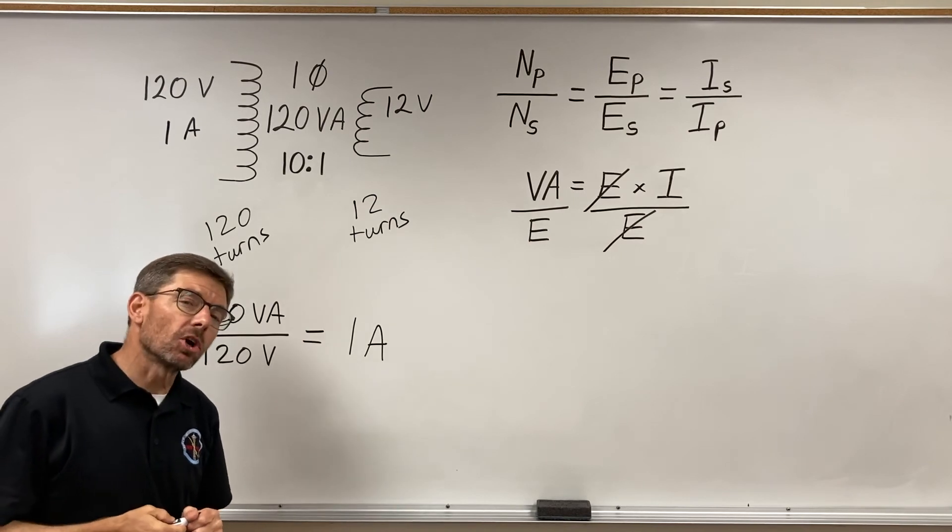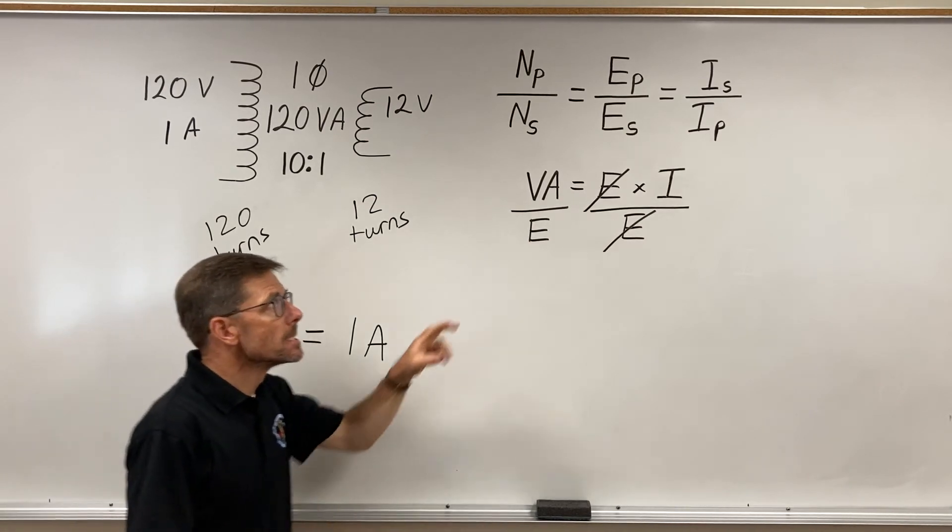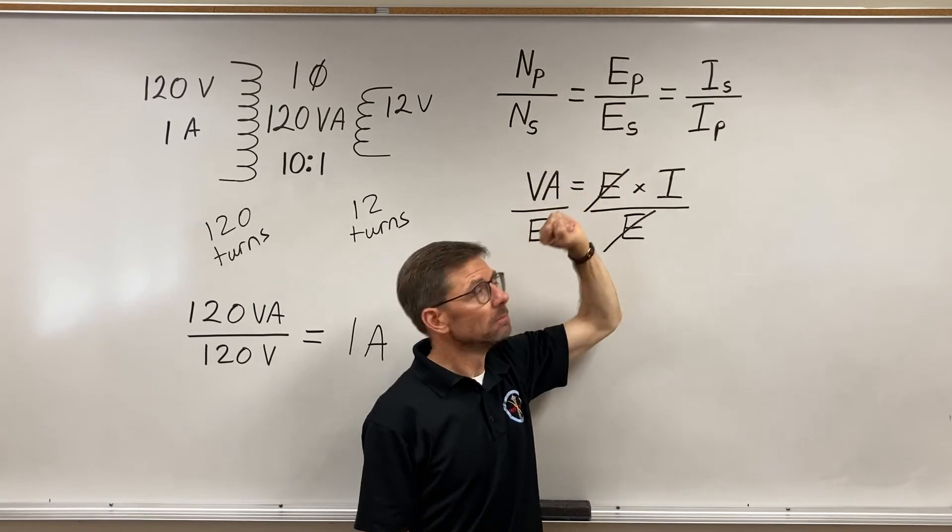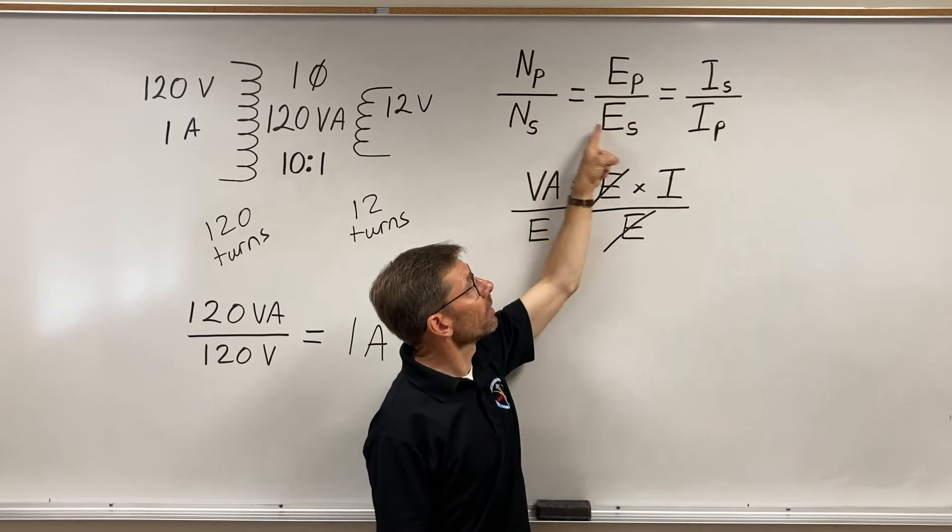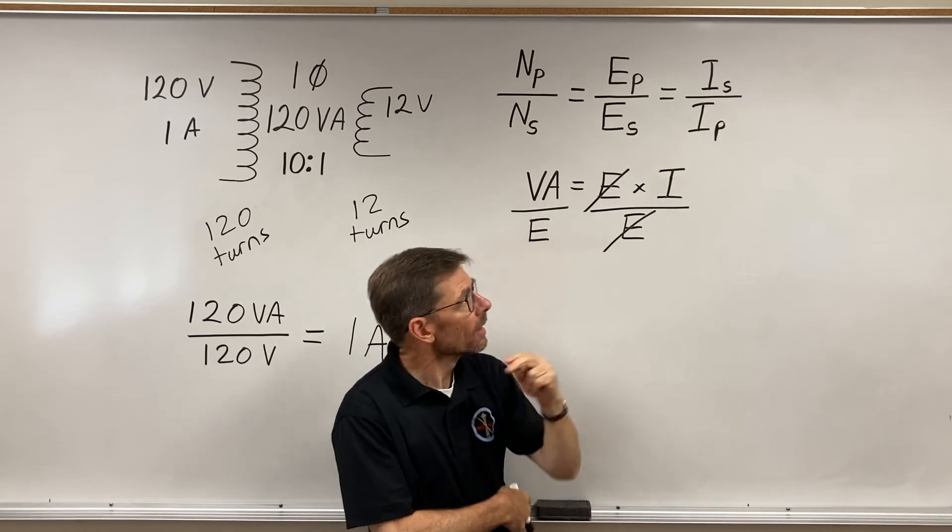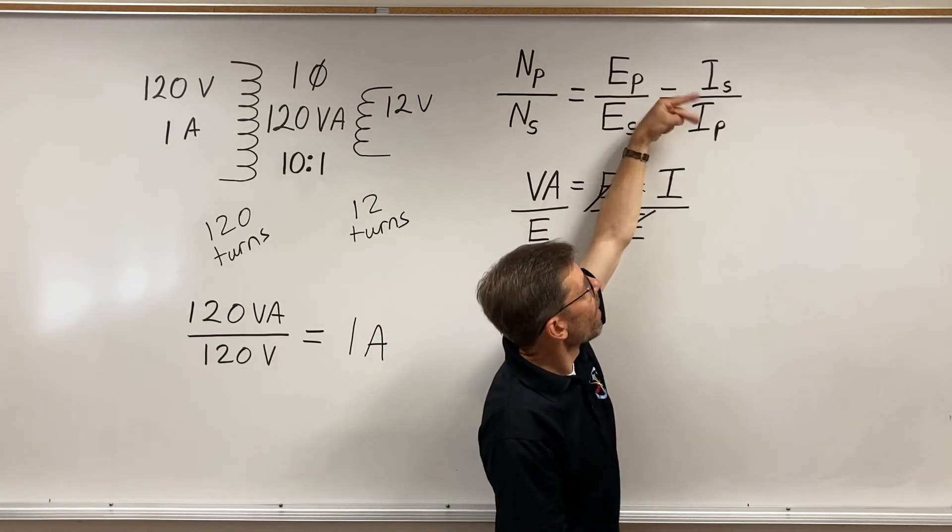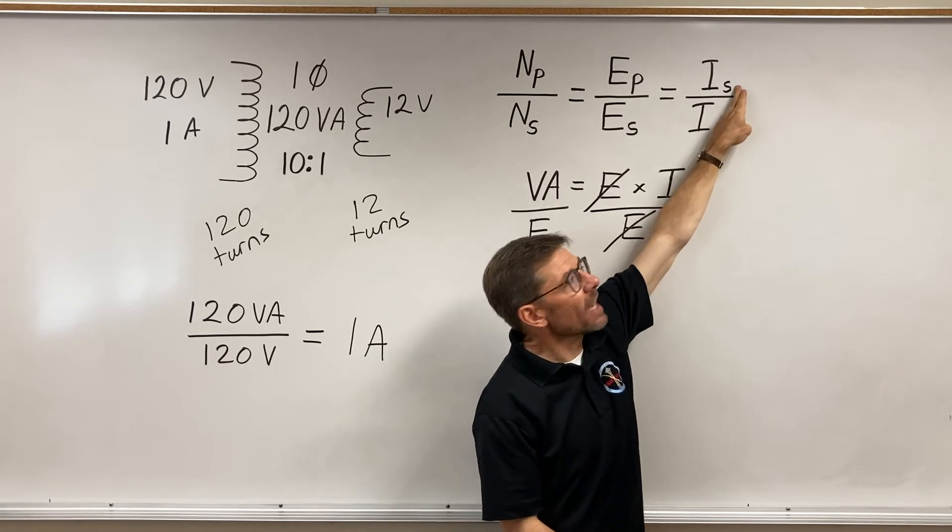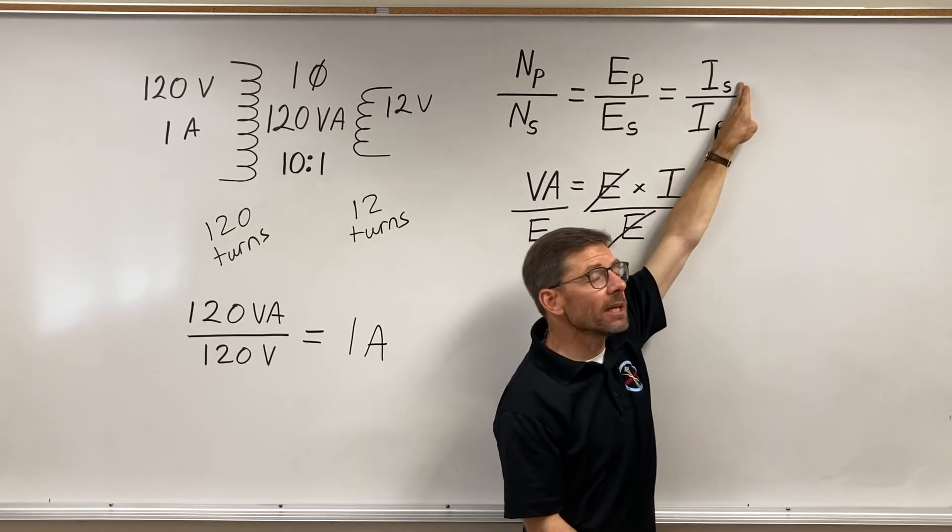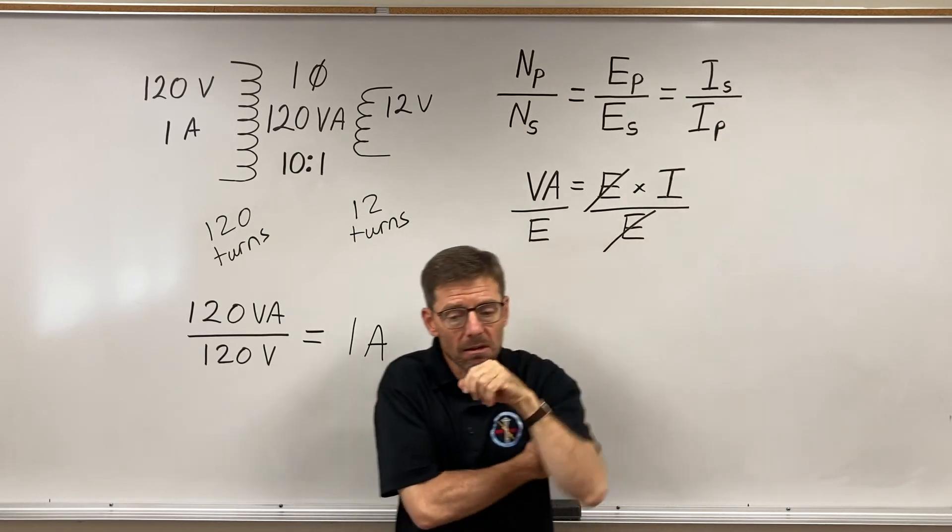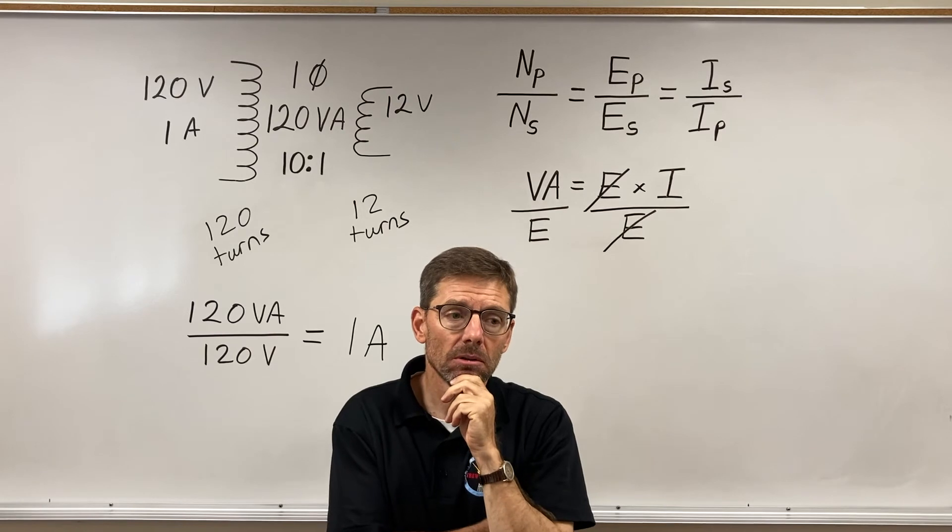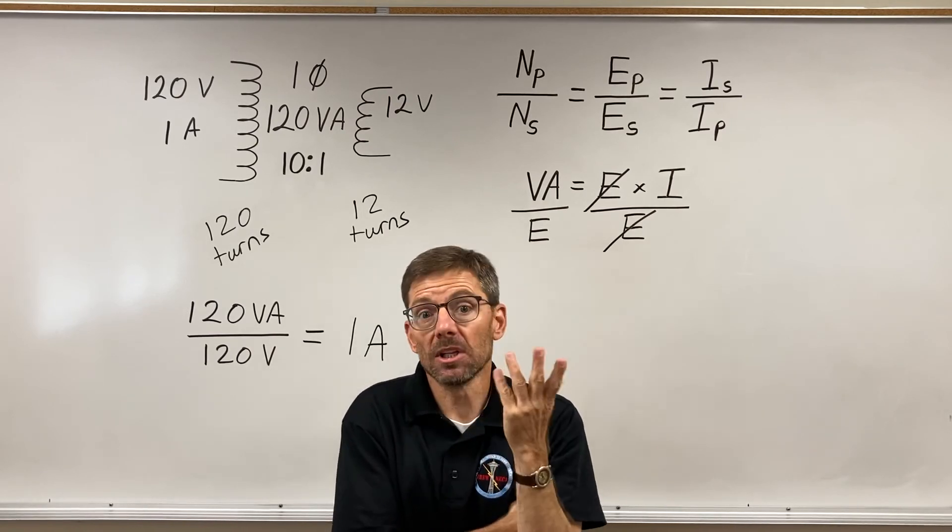So, let's look at our ratios again. The voltage is directly proportional, primary to secondary, to the number of turns. But the current, I put the secondary up there, S for secondary, P for primary. Put the secondary in the numerator and the primary here. Is it inversely proportional? Well, let's do the math and see.